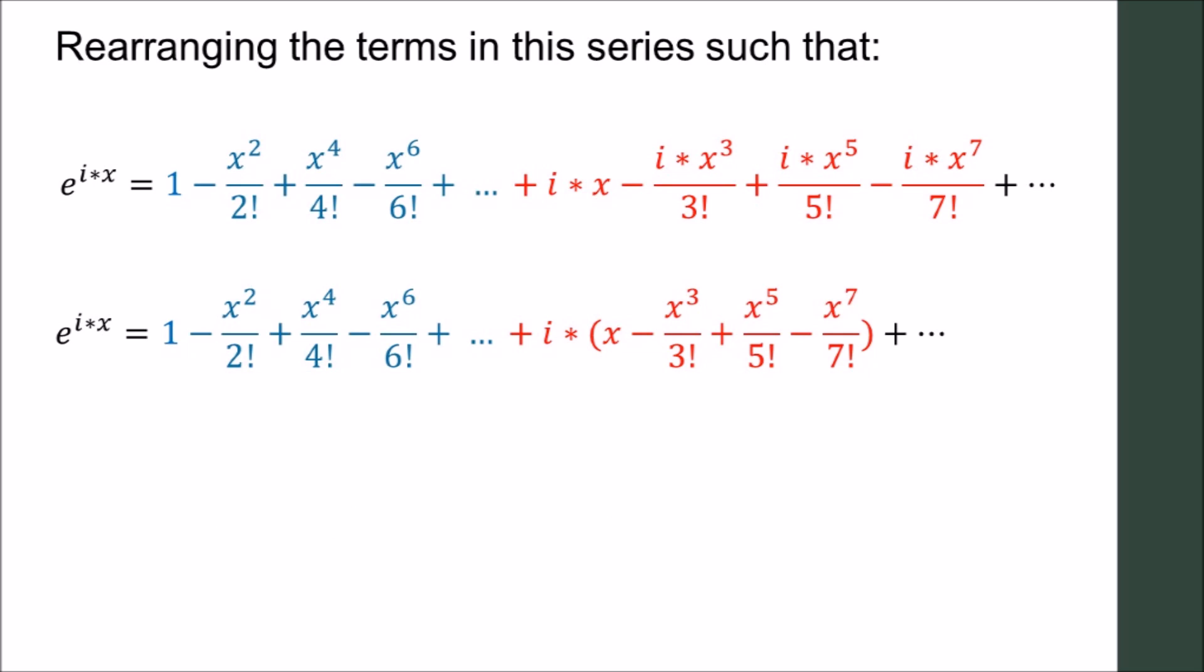Rearrange the terms in the expansion such that all terms not containing i, those terms in blue, are collected, and all terms containing i, those in red, are collected. So we have two separated collections.